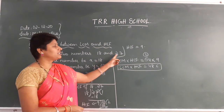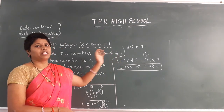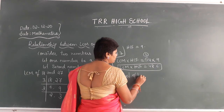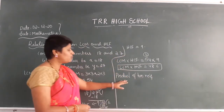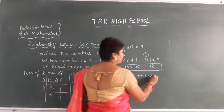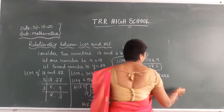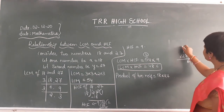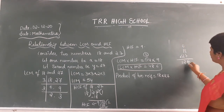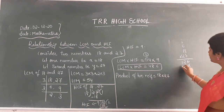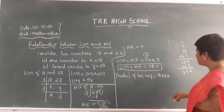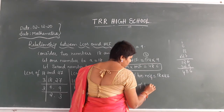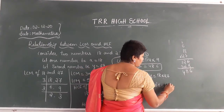Now multiply the given numbers x and y. These are the two numbers I have taken. Now multiply 18 into 27. 7 eights are 56, write 6 carry 5. 7 ones are 7, plus 5 gives 12, write 2 carry 1. Now 2 eights are 16, write 6 carry 1. 2 ones are 2, plus 1 gives 3. So 18 × 27 = 486. Product of 2 numbers is 486.